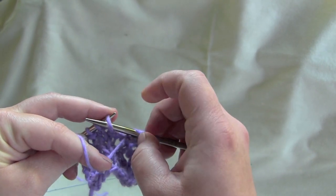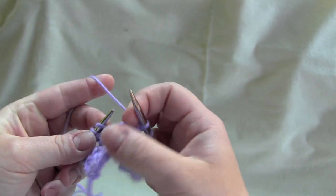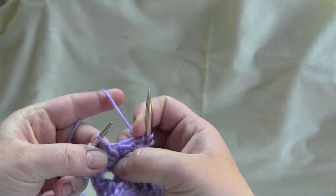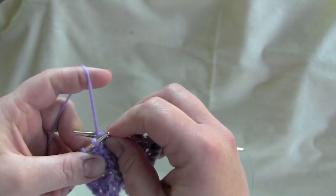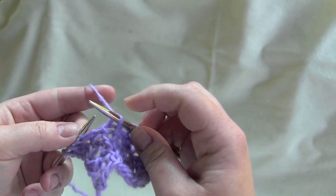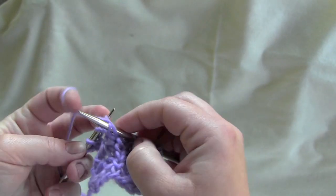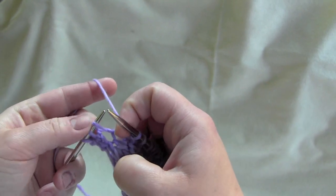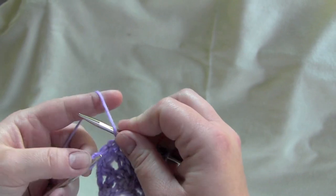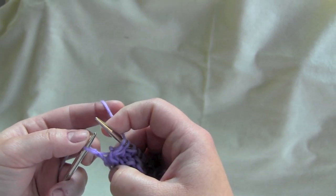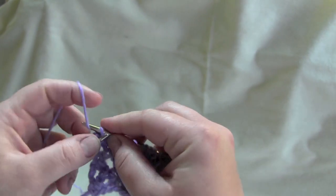So the repeat is purl one, knit into the stitch below, purl one, knit two together, and yarn over. And you should have one stitch after your last repeat, so you just knit.